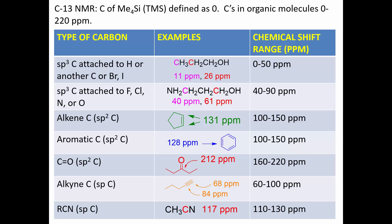If we look at SP3 carbons attached only to hydrogen, another carbon, or bromine or iodine, they will come in the lowest region: zero to 50 parts per million. For example, in n-propyl alcohol, the carbon not attached to the alcohol comes at 26, and the carbon furthest from the OH comes at 11 — both in the zero to 50 ppm range.